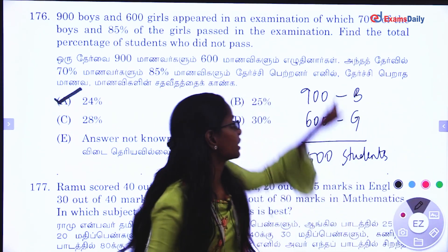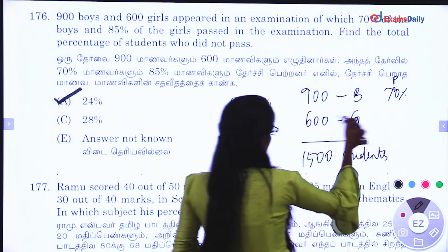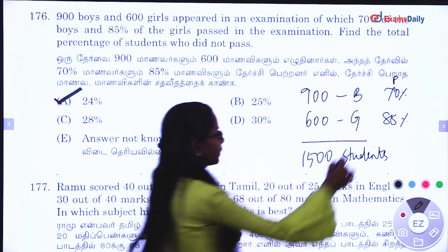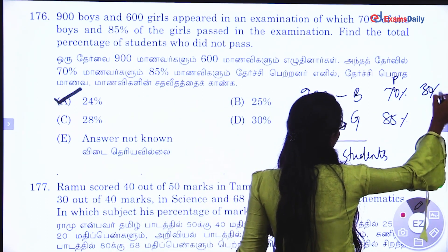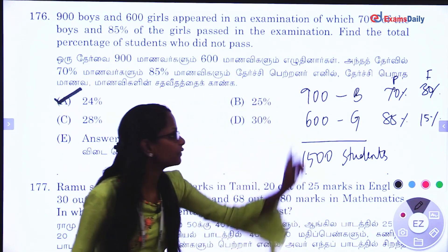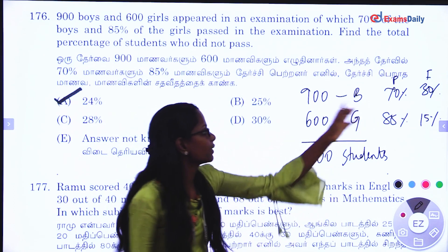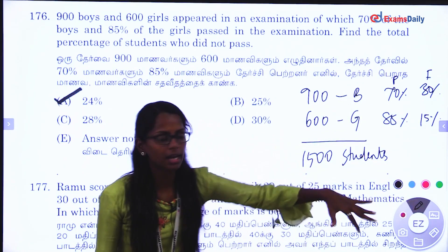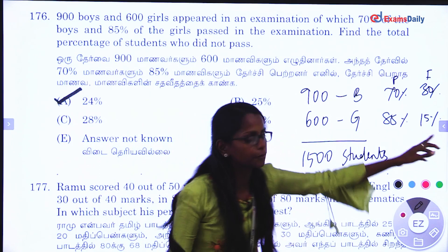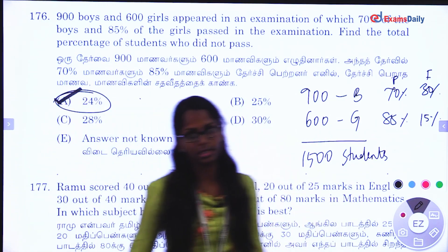In this case, 70% pass for boys. In this case, 85% pass for girls. So where do you get fails? 30% fail for boys and 15% fail for girls. Calculate the student count. So directly 30% and 15% balance — answer is 24.